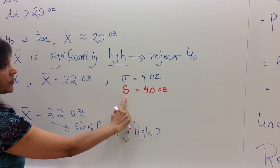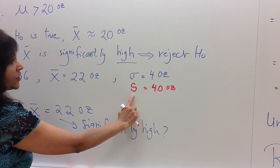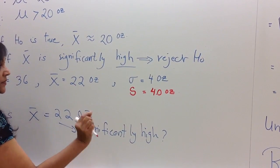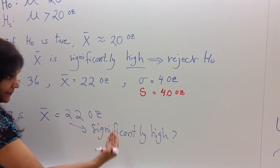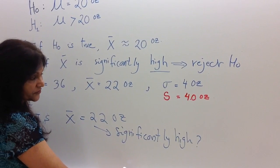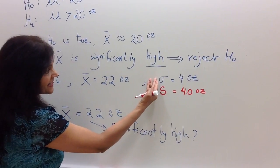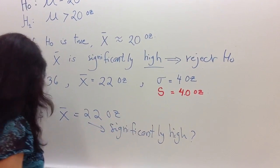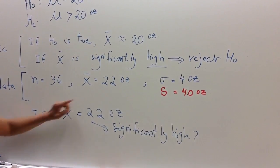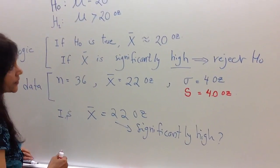Now, how would I know in a problem that it is S and not sigma? Well, if you read the problem, it would say that the sample standard deviation is 4 ounces, or it would say population standard deviation is 4 ounces. So it will be mentioned in the problem.